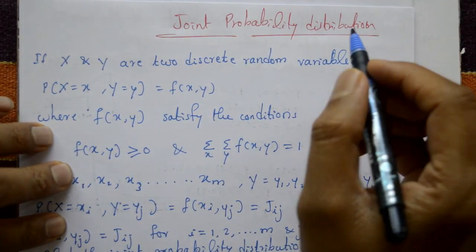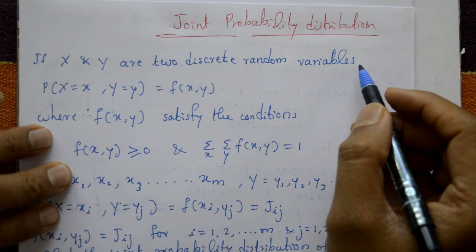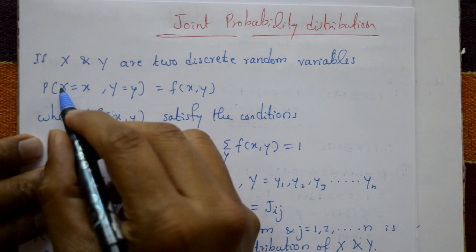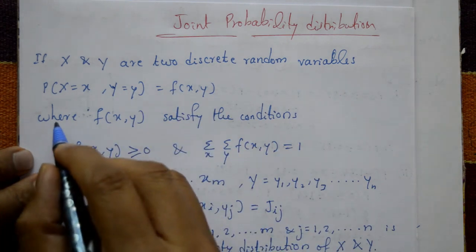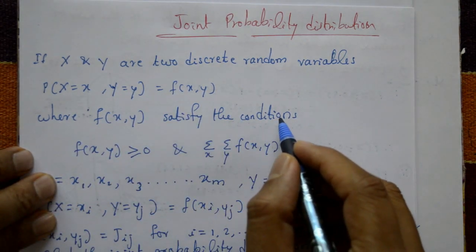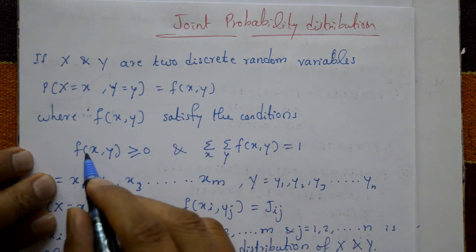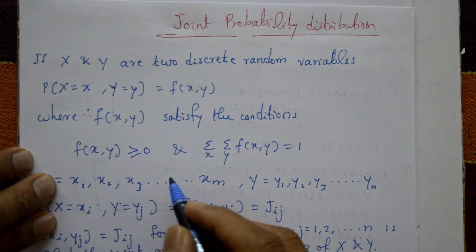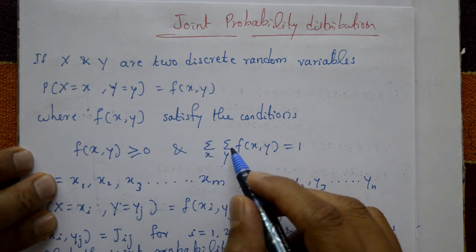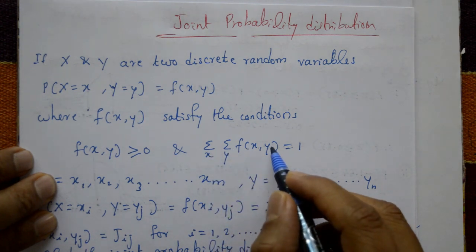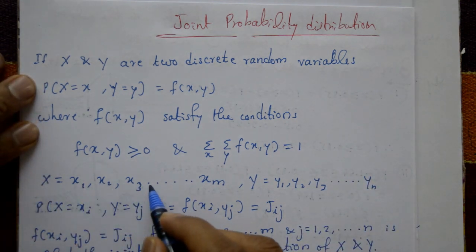Joint probability distribution: if X and Y are two discrete random variables, then P(X = x, Y = y) = F(x, y), where F(x, y) satisfies two conditions: F(x, y) ≥ 0, and the sum over all values of X and all values of Y of F(x, y) equals 1.